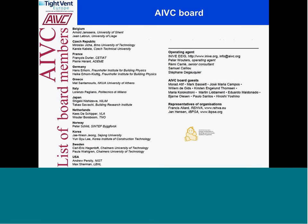Just a few words about the AIVC board. It is made of representatives from many countries, which you can see listed on this slide — from Belgium, Czech Republic, France, Germany, Greece, Italy, Japan, Netherlands, Norway, Korea, Sweden, and the USA. We have Eniv, who is the operating agent of the AIVC. Some guests also, and representatives of organizations — in this case, Riva and Ibiza — who are representatives in the AIVC board.